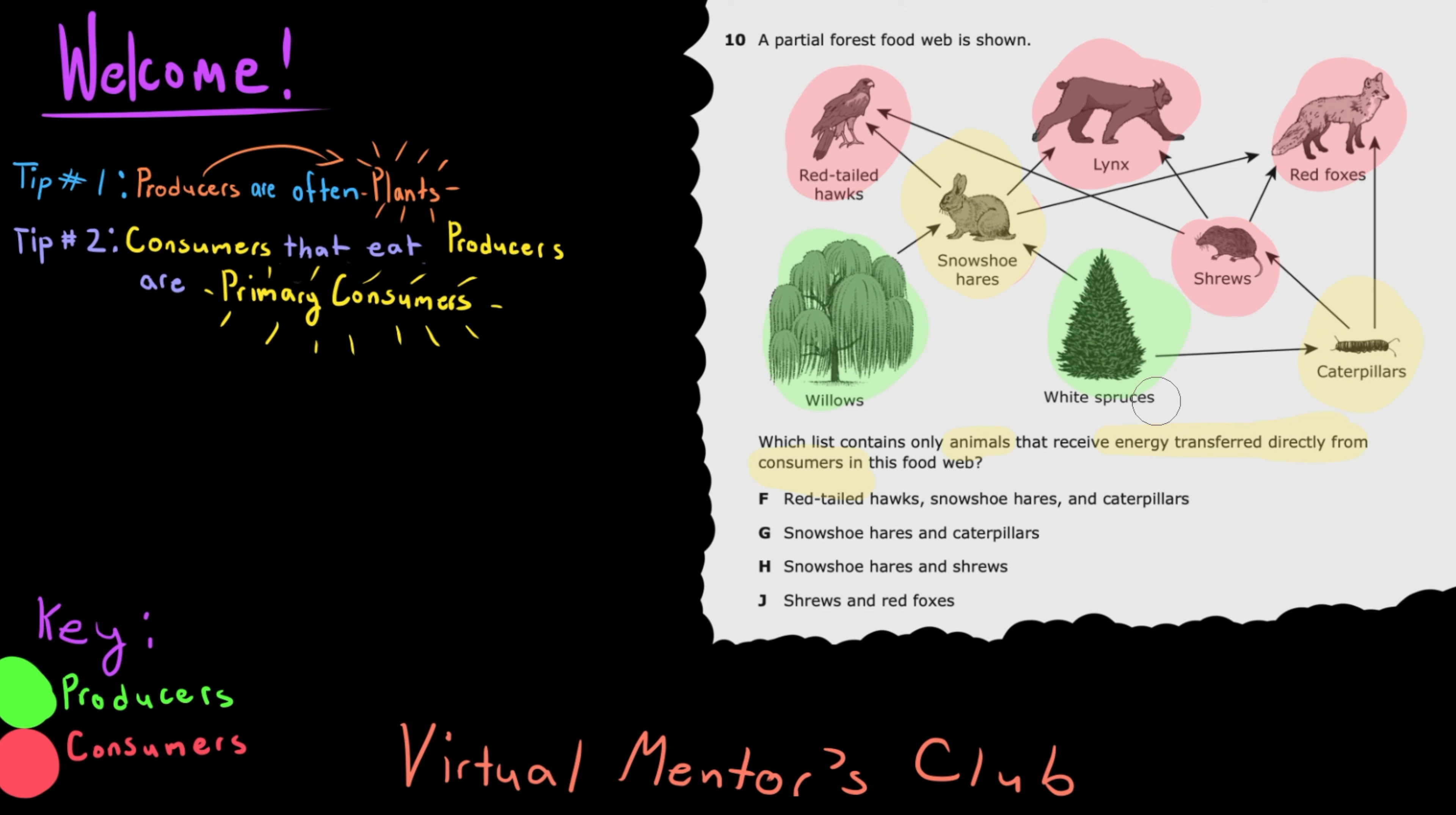Okay, now let's just eliminate all the answers that include the primary consumer snowshoe hares and caterpillars, since those are the only animals that don't fit the description. So going from top to bottom,